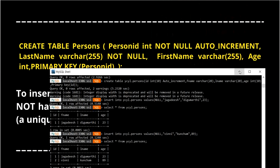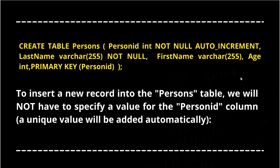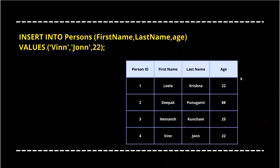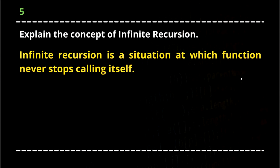The fifth question: explain the concept of infinite recursion. Infinite recursion is a situation in which the function never stops calling itself. There is also a related concept called the halting condition — a condition at which the function stops calling itself is called a halting condition. It's good to have an idea about this concept.